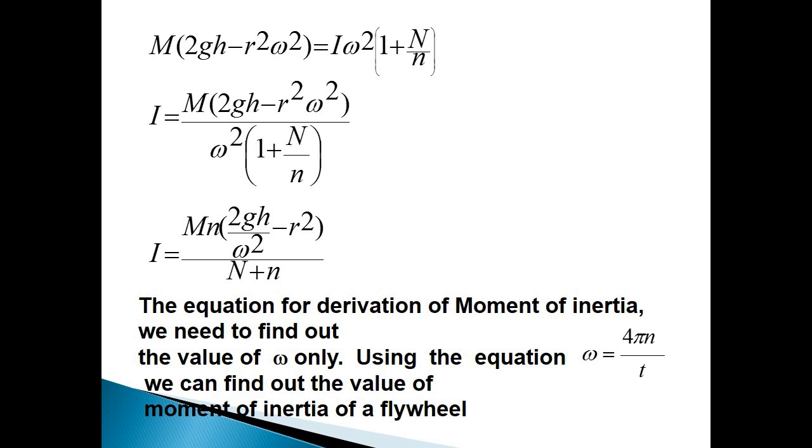Then I = M(2gh - r²ω²) divided by ω²(1 + N/n). Then I = Mn(2gh/ω² - r²) divided by (N + n).